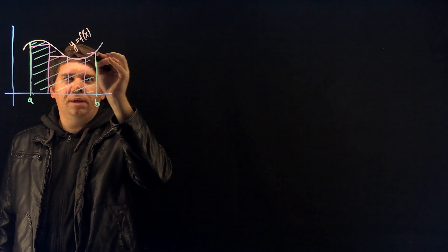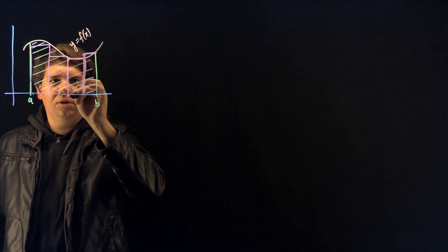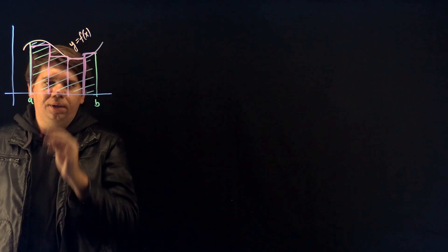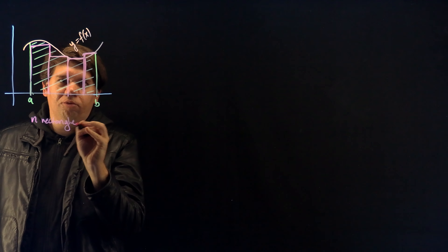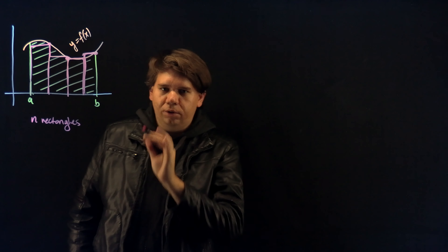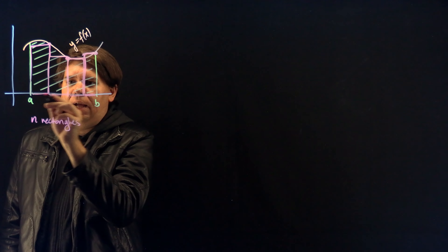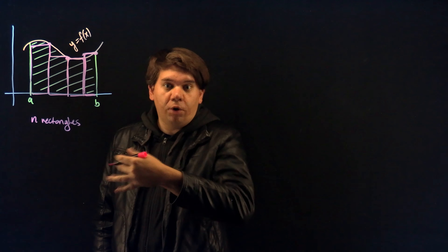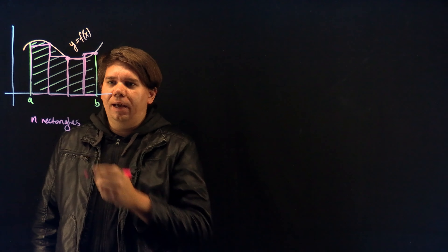We're going to imagine these are all the same width. We're going to say there are n rectangles. These happen to be right endpoint rectangles, although you can play the same game with left endpoint rectangles and it would also work out. I want to find the area of the rectangles to approximate the area under the graph, and then have more and more of them for a better approximation.